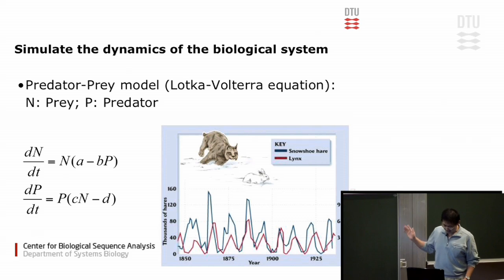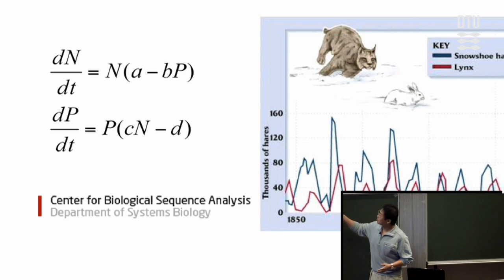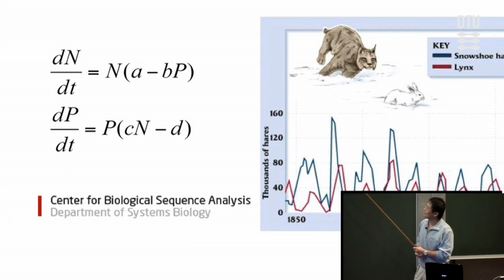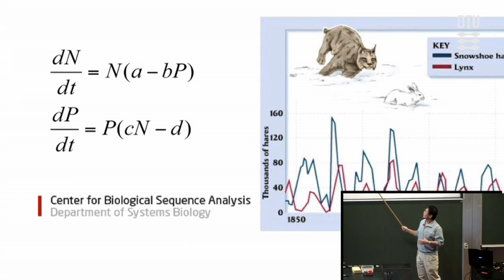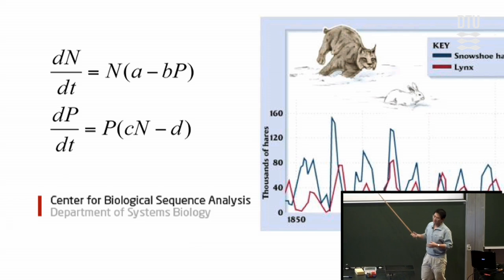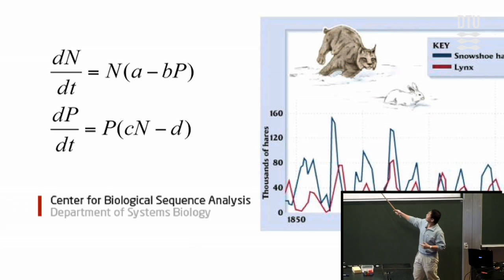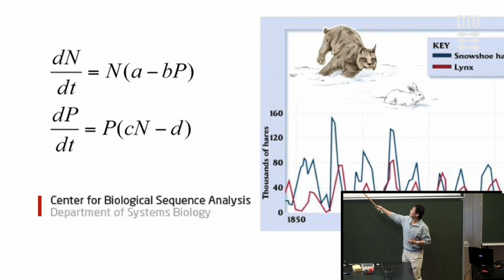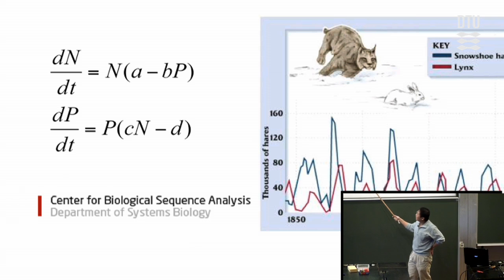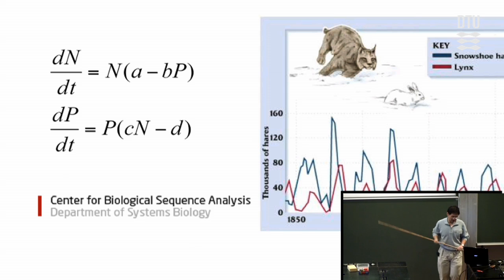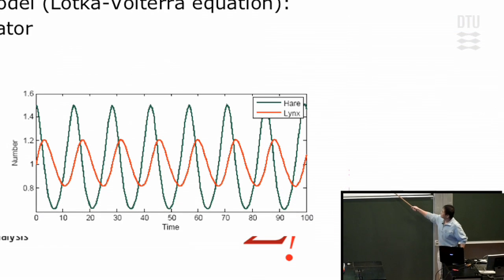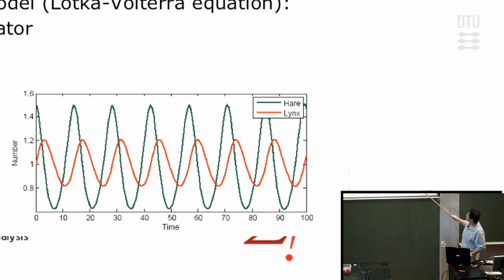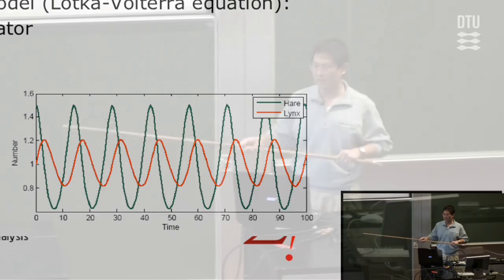Instead of looking at the actual population in nature, an alternative way of looking at this is by setting up these two equations. Basically they are derived from the exponential growth model, except that people introduced two new terms to represent the interaction between the two populations. For example, for the population of the prey, there is a negative effect from the number of predators. And for the number of predators, there is a positive effect from the preys. That's exactly what we've been explaining with these curves. By solving these equations, we can eventually reproduce this stable oscillation, this periodic change in the population of the two species. That's why we can use ODE to simulate what is really taking place in the wild, in nature.